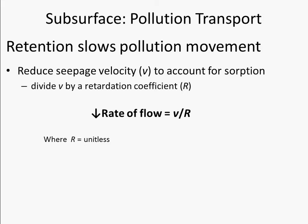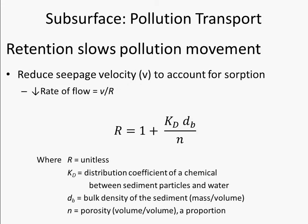We divide the seepage velocity v by a retardation coefficient r to slow the rate of flow, where r is unitless. The equation for r includes kd, the distribution partitioning coefficient — the concentration of a chemical in sediment divided by its concentration in water — as well as db, the bulk density of the sediment, and n, the porosity as a proportion (not a percentage) in this equation.